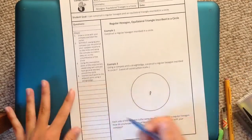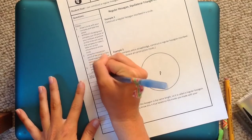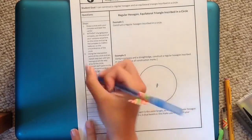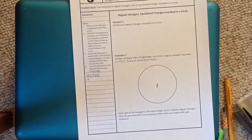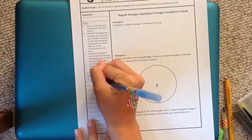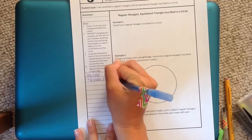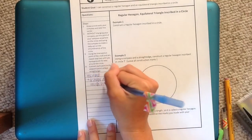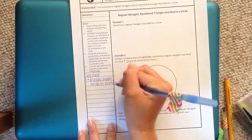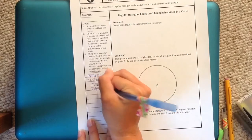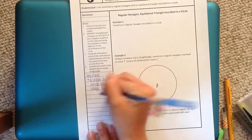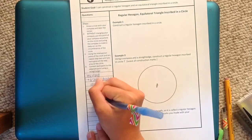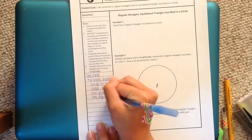Now inscribed means that we are drawing a shape so that the edges of the shape, the vertices, touch the edge of the circle. So we're going to define this over here off to the side. So it's a shape drawn inside of another shape with the points on the edge of the second shape.